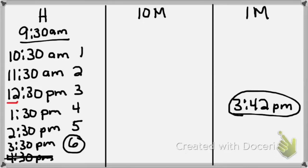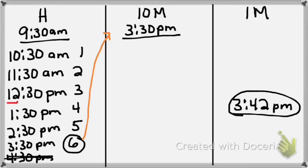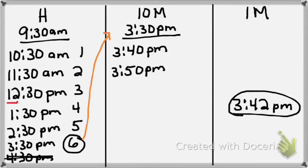I take my last time of 3:30 p.m. and move it to the next column, writing and underlining it. Now I count by 10 minutes, making sure not to pass 3:42. 3:30 plus 10 minutes is 3:40 p.m. — not past 3:42. Another 10 minutes would be 3:50 p.m., which is past 3:42, so I cross that out. I end my 10-minute counting at 3:40 p.m. That's one 10-minute section. I'll circle that and save it.